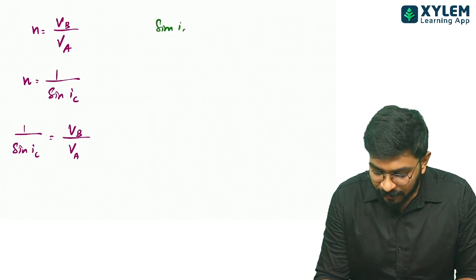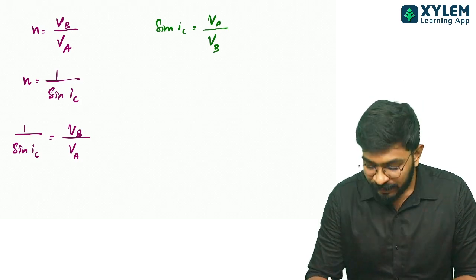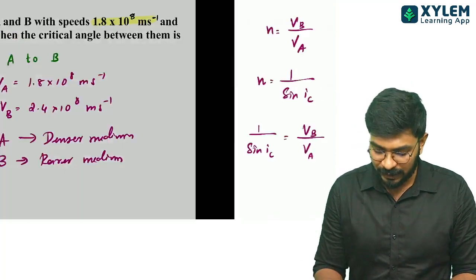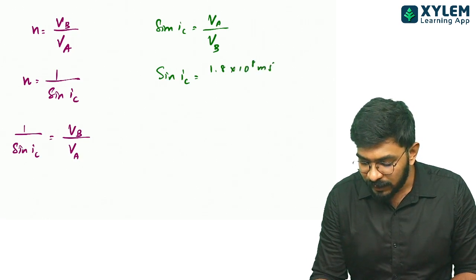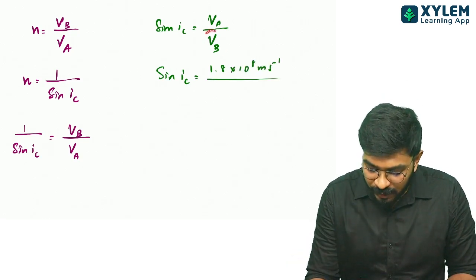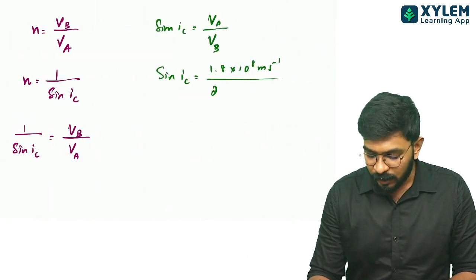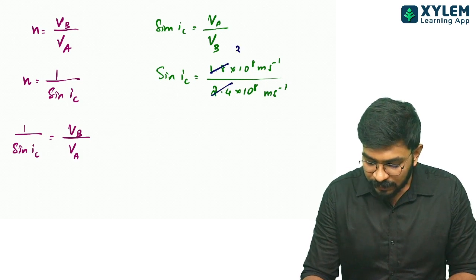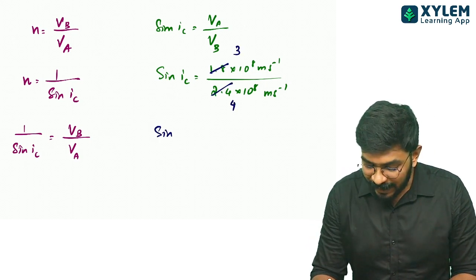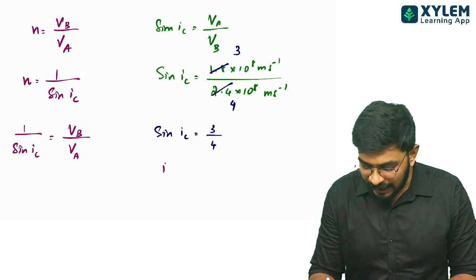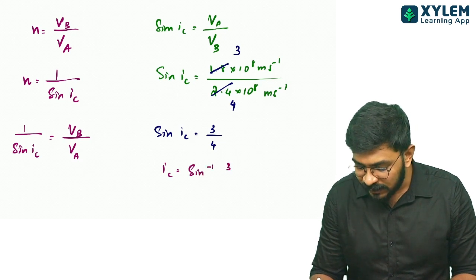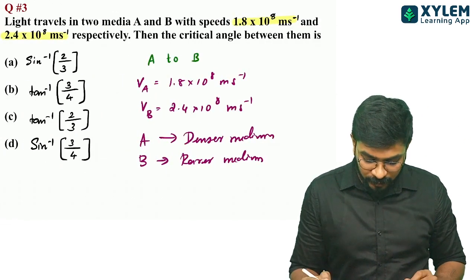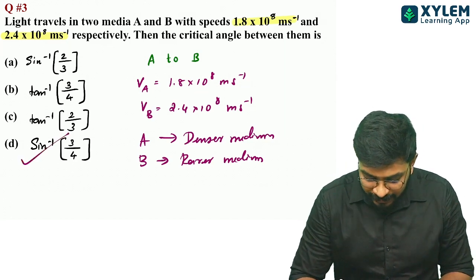Sin of critical angle IC is equal to VA divided by VB, which is 1.8×10⁸ divided by 2.4×10⁸, giving 3 by 4. So IC is equal to sin inverse of 3 by 4. Option D is the answer: critical angle equals sin inverse 3 by 4.